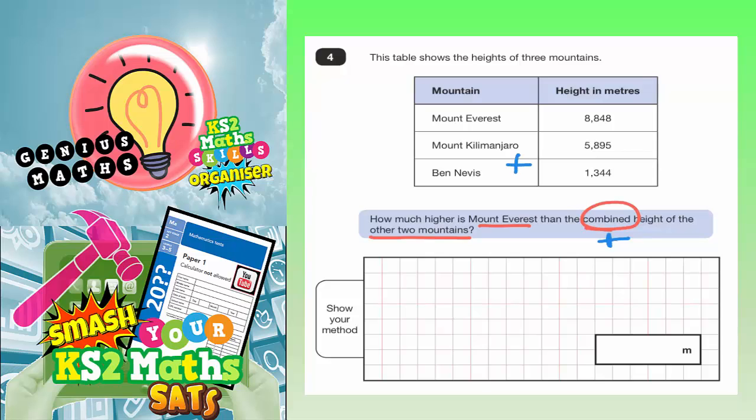So we need to add these two together, which means we need to add together 5,895 and 1,344. So that's what I'm going to do first.